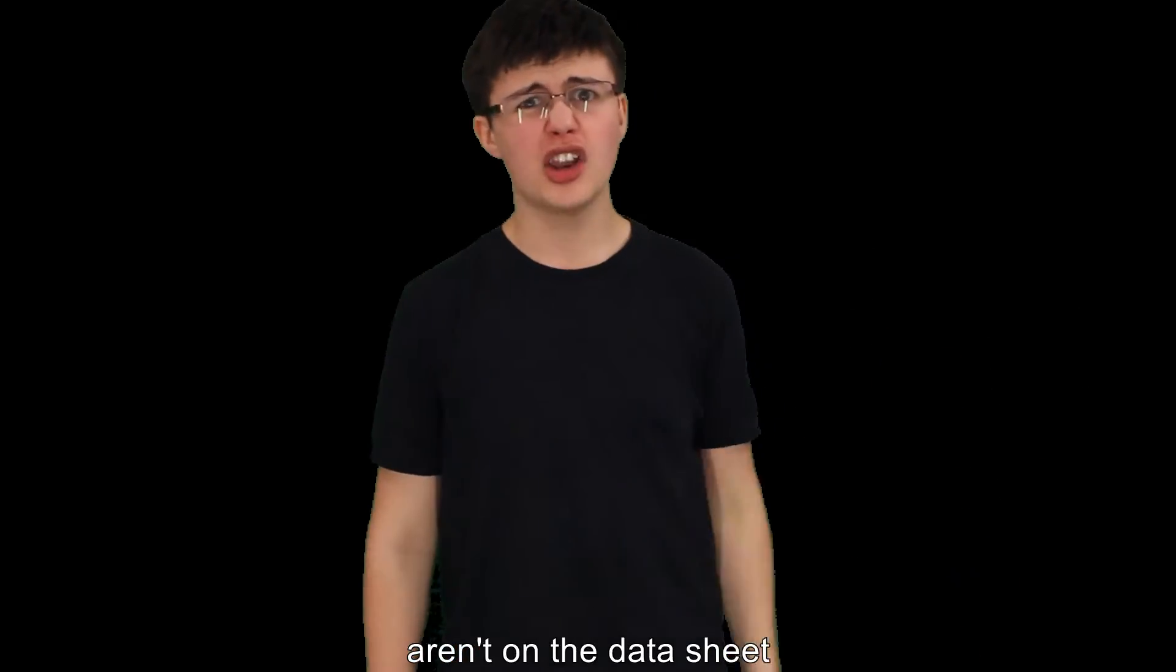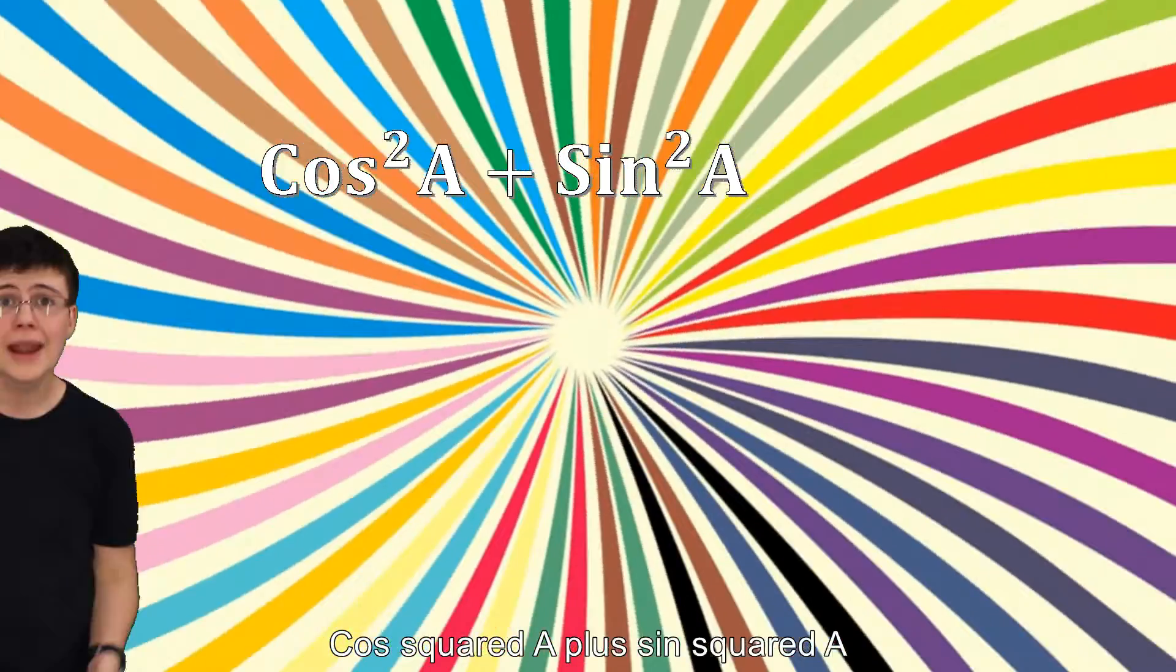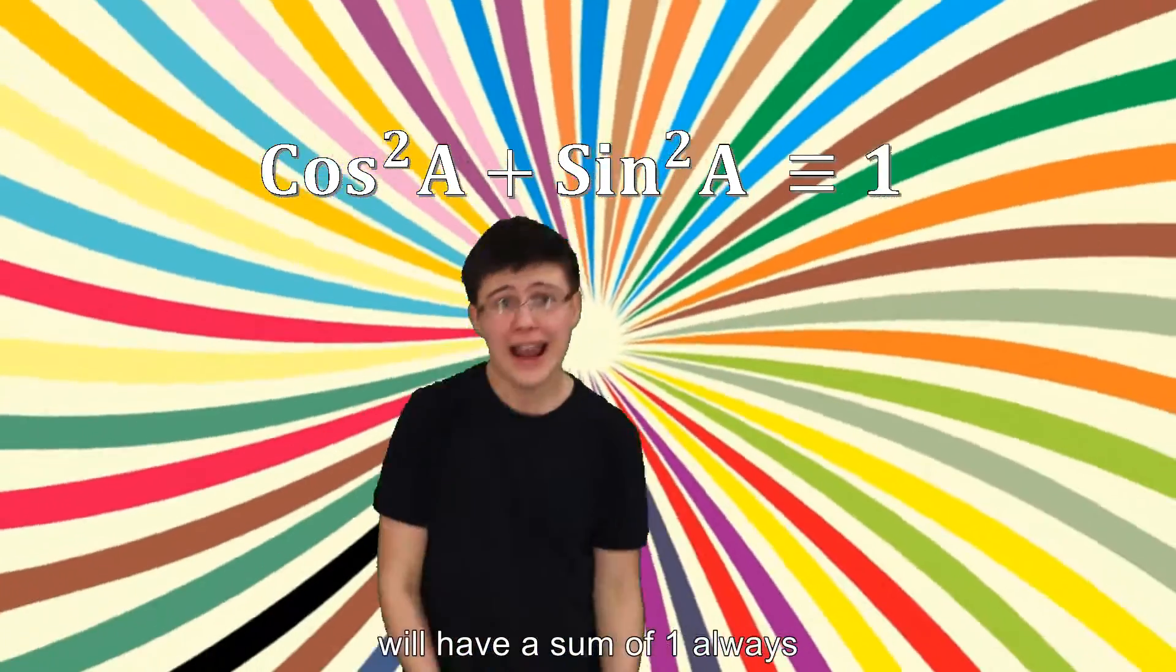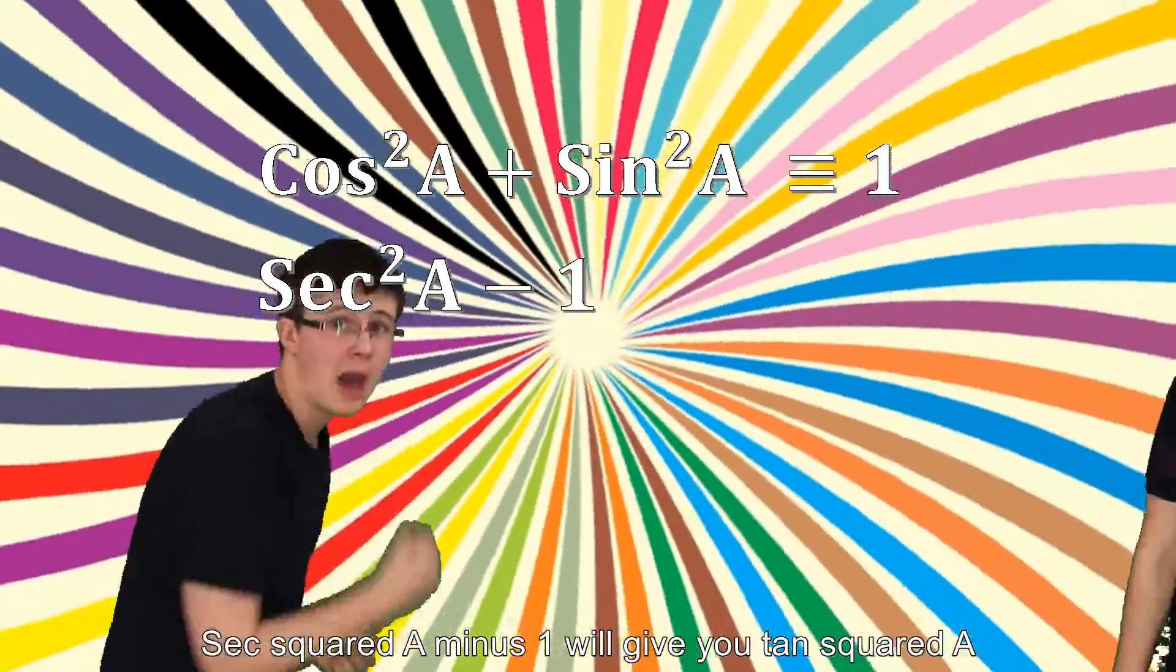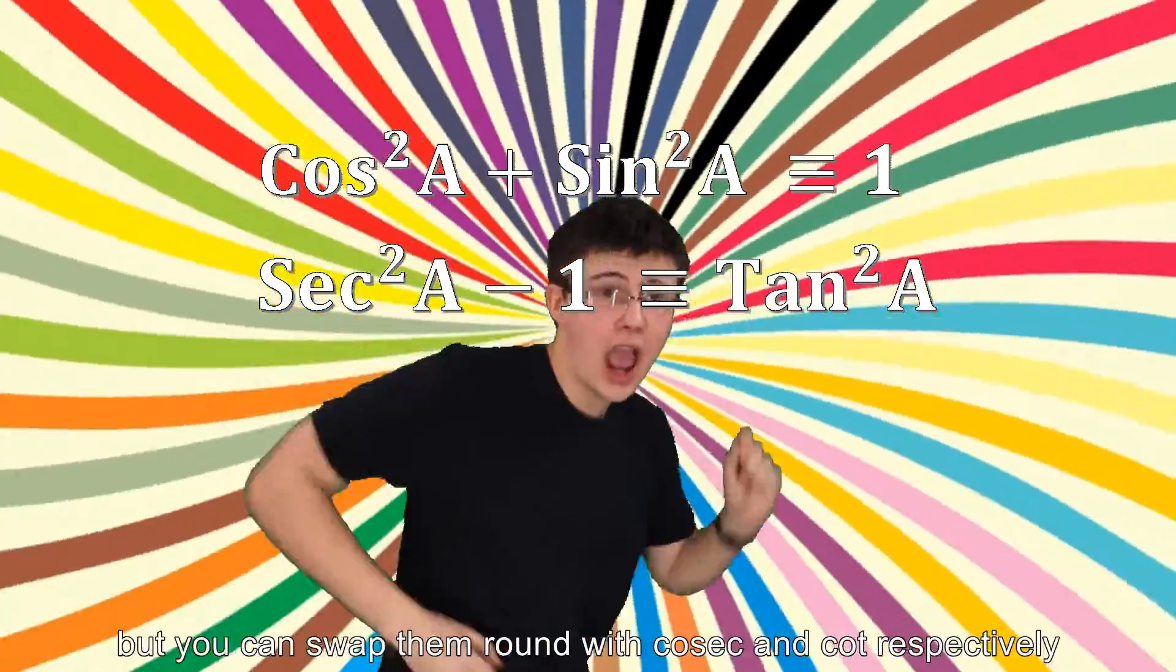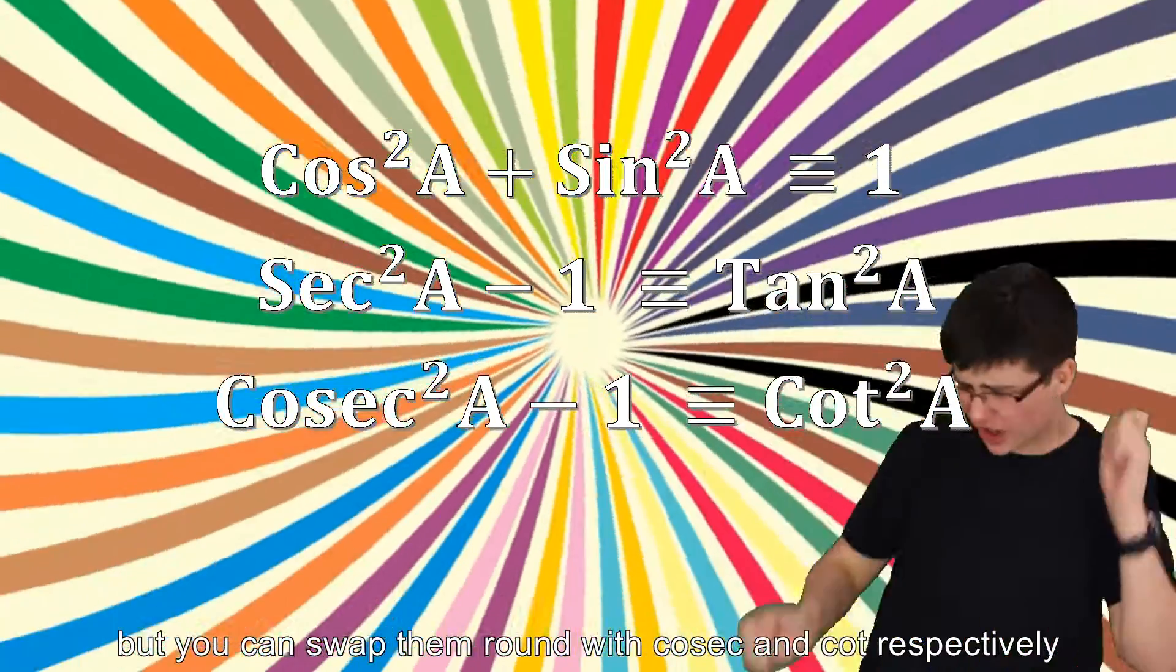As some very useful formulae aren't on the datasheet. Cos squared A plus sine squared A will have a sum of one always. Sec squared A minus one will give you tan squared A, but you can swap them round with cosec and cot effectively.